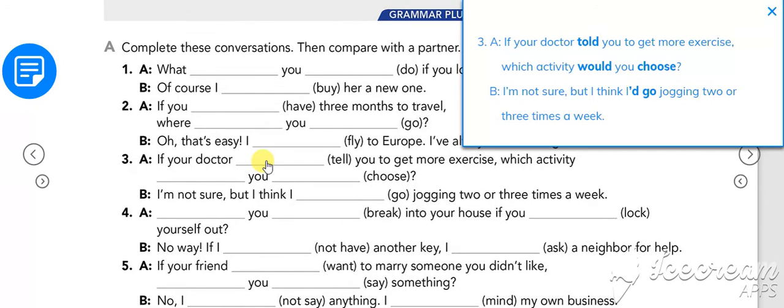Number three: if your doctor told you to get more exercise which activity would you choose? B: I'm not sure but I think I'd go jogging two or three times a week.